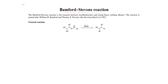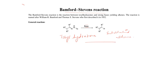In this reaction, tosyl hydrazone is reacted with base to produce substituted alkene.